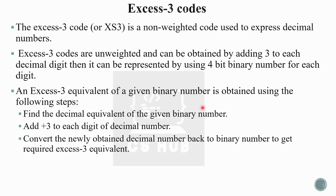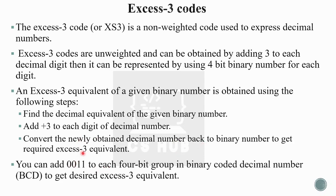To find the Excess-3 equivalent of a given binary number: first, find the decimal equivalent of the binary number; then add three to each digit of that decimal number; finally, convert the newly obtained decimal number back to binary to get the required Excess-3 equivalent. Alternatively, you can add 0011 (binary for three) to each four-bit group of a BCD number.